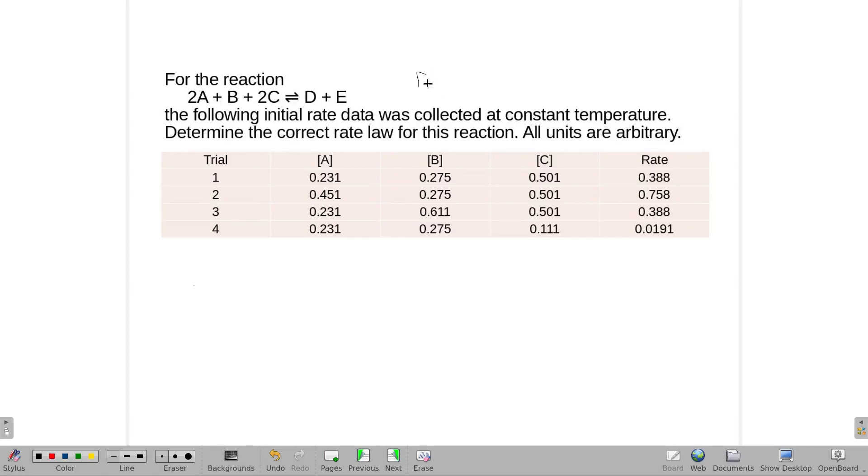Now we know it's going to be something like this, where A is going to have some coefficient, and B is going to have some other one, and C is going to have yet another one. We're going to need to solve for each one of those coefficients: the M, N, and P.